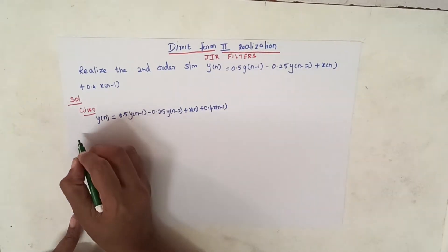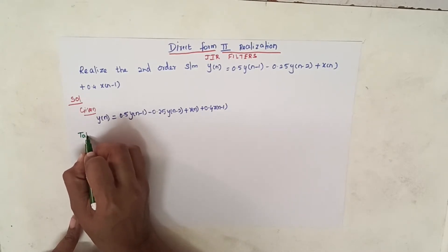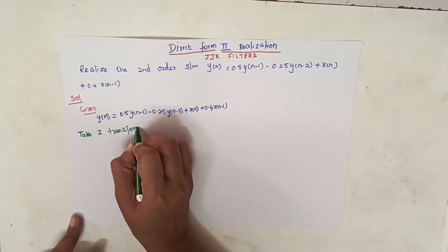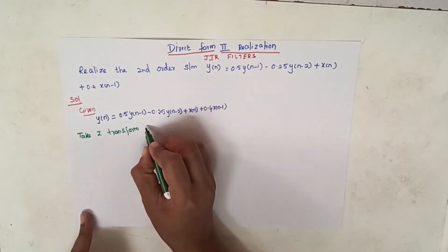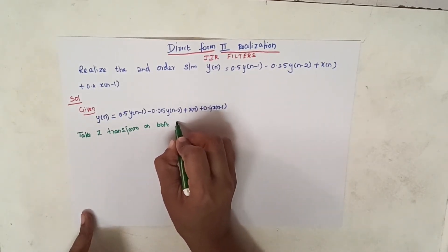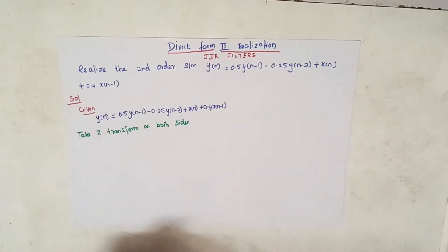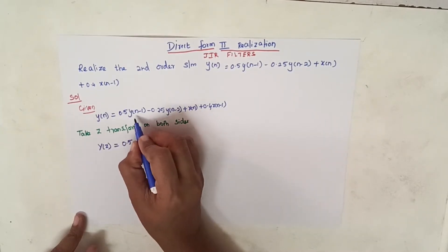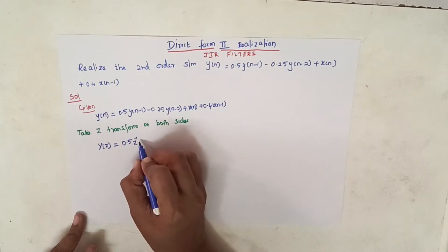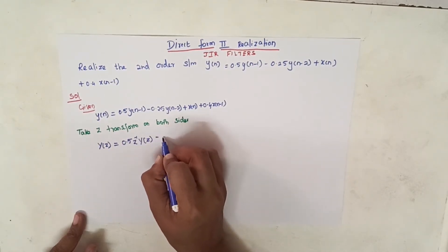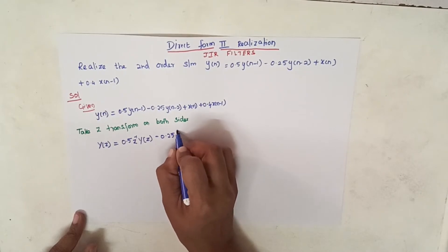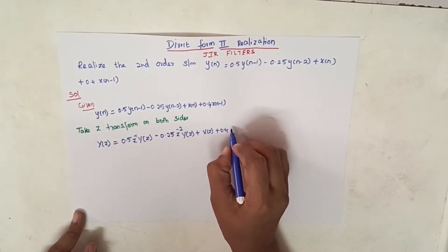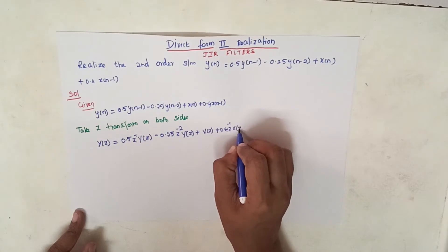As a first step, we are supposed to take the Z-transform on both sides in order to find the transfer function. Applying the time-shifting property of the Z-transform: Y(z) = 0.5·z⁻¹·Y(z) − 0.25·z⁻²·Y(z) + X(z) + 0.4·z⁻¹·X(z).